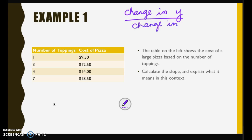In this situation we've got number of toppings being compared to the cost of a pizza. Because the cost of your pizza depends on the number of toppings, the cost of your pizza is y and your number of toppings is x.